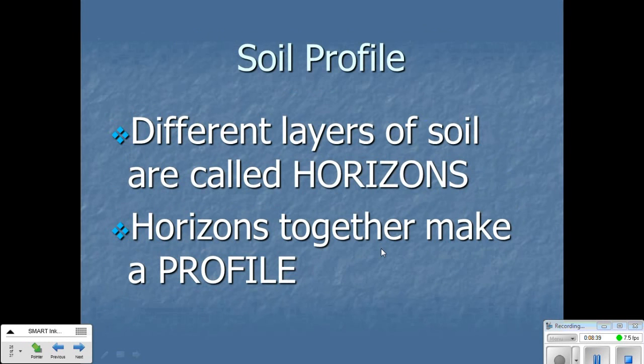A soil profile. There are different layers of soil are called horizons. Just like when you look out at the sun as it sets, it's a horizon. So different layers are called horizons. And all horizons stuck together make a profile. Just like when we talked about topographic profiles, you see different layers, different levels of elevations. Same thing here with the different horizons for soils.